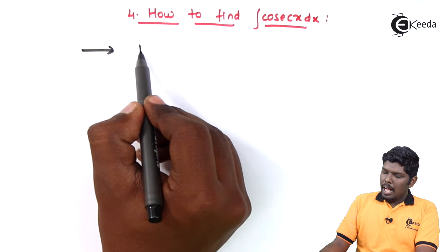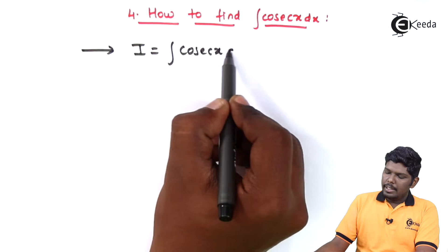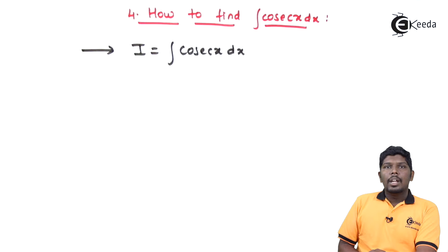Considering integral I is equal to cosec x dx. Now, to find integration of cosec x dx, we are going to use same logic that we have used to find the integral of tan x, cot x and sec x.